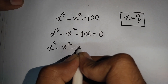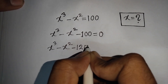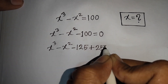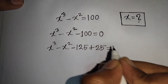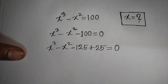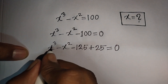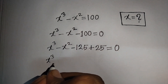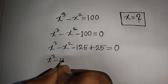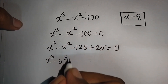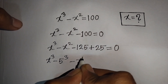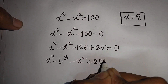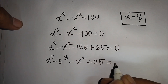...minus 100 can be written as minus 125 plus 25, equal to 0. Now we have x³, and minus 125 can be written as minus 5³, then minus x² plus 25, equal to 0.